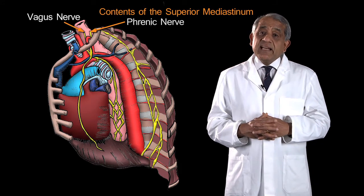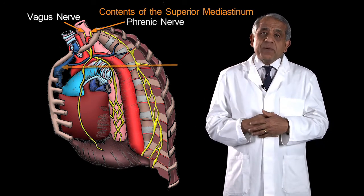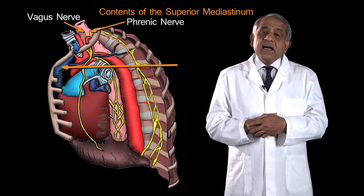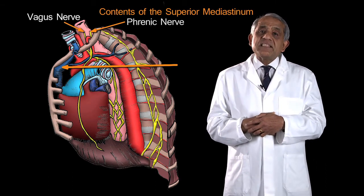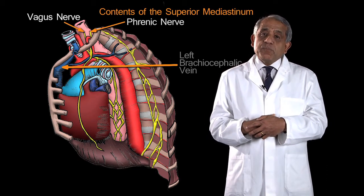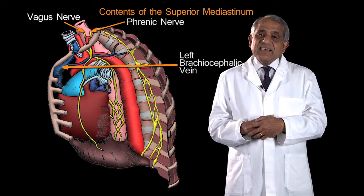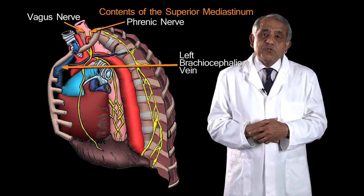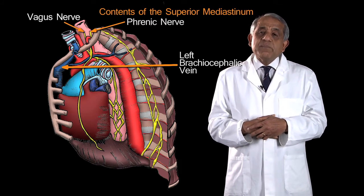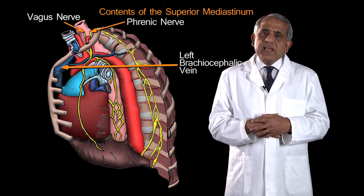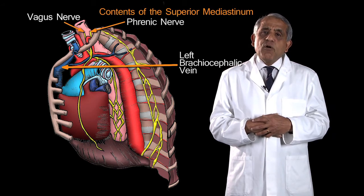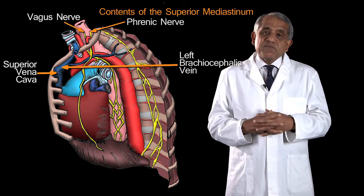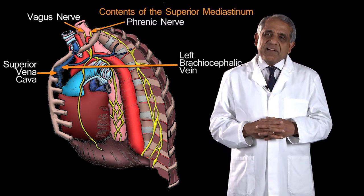An important and large vein crosses the superior mediastinum obliquely in front of the aortic arch, and this is the left brachiocephalic vein. Once the left brachiocephalic vein crosses the midline to reach the right side, it meets the much shorter right brachiocephalic vein to form the superior vena cava. So the commencement of the superior vena cava is in the superior mediastinum.